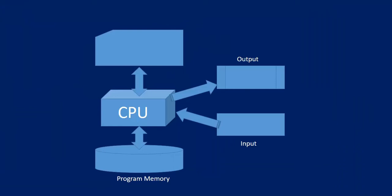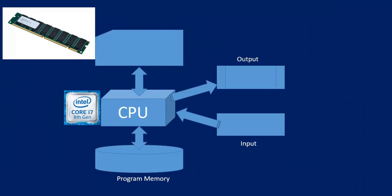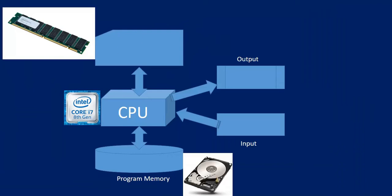In our previous lecture we have seen the organization of computers. In the center there is a CPU and all other peripherals like program memory, temporary memory which is RAM, and output and input components are connected with the CPU. Temporary memory is RAM, program memory is hard disk — usually we use a hard disk, or nowadays it may be an SSD or some other ROM.